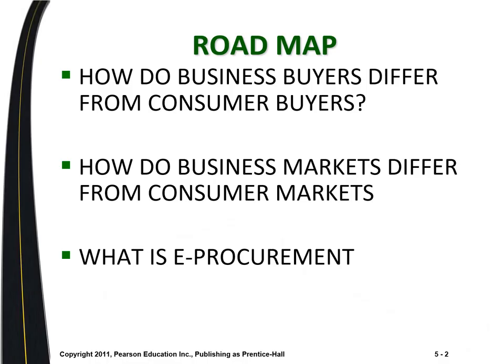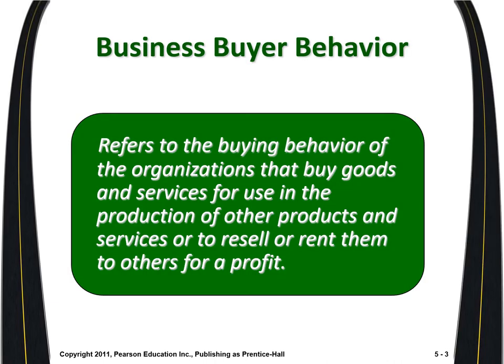So let's start with the roadmap. We're going to look at how business buyers differ from consumer buyers. Secondly, we're going to look at how business markets are different from consumer markets — business markets tend to be more steady, with a lot more repeat buys of the same items, tied to business conditions and long-standing relationships with providers. Lastly, we're going to look at what e-procurement is.